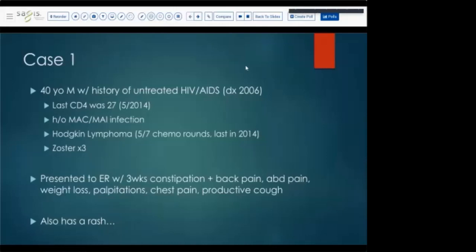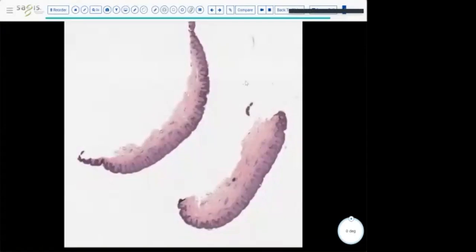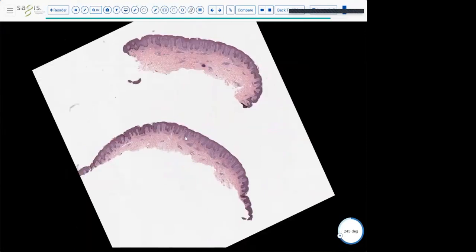The first case was a 40-year-old male with a history of untreated HIV and AIDS. You can see the CD4 count was very low and had a lot of complications. He presented to the ER with three weeks of pretty significant systemic symptoms, but then also had a rash. The clinical exam patient had several grouped one to three millimeter vesicles with underlying erythema involving the entire trunk and some unroofed vesicles and excoriations. The thought due to all those vesicles was disseminated zoster, maybe some sort of drug exanthem. So a biopsy was performed.